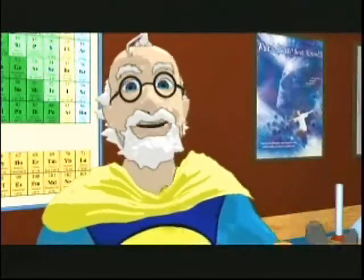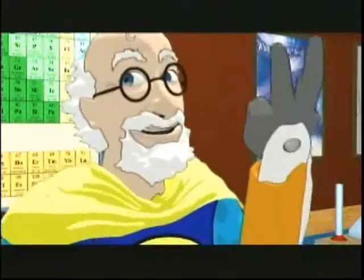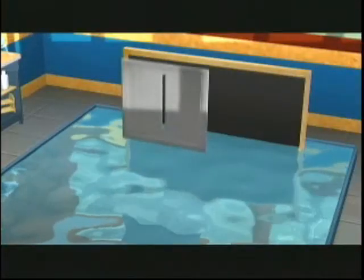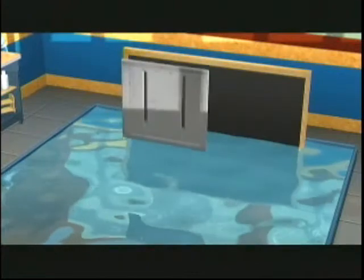But when we add the second slit, something different happens. If the top of one wave meets the bottom of another wave, they cancel each other out. So now, there is an interference pattern on the back wall.